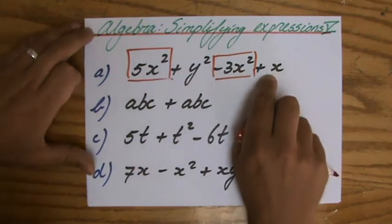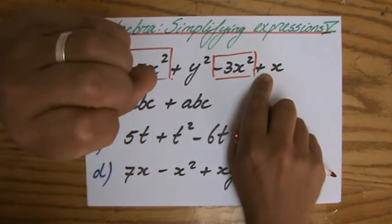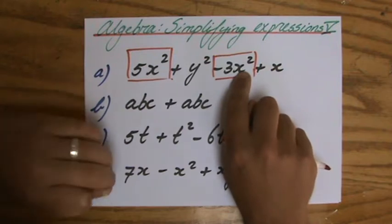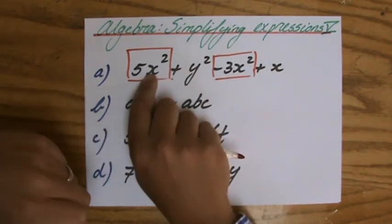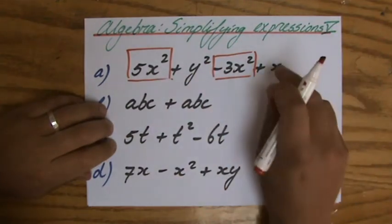What about that x? Are they like terms? No, they're not because their combination isn't the same. This is x and this is x times x, which is x², meaning x times x. So that x is not a like term.